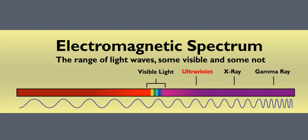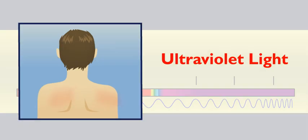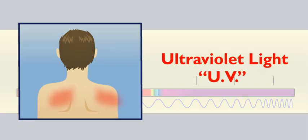Some, like x-rays and ultraviolet light, are shorter than visible light waves. Ultraviolet light? Isn't that what causes sunburns? Right. Also known as UV.